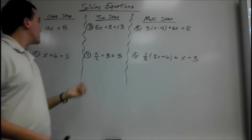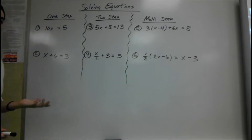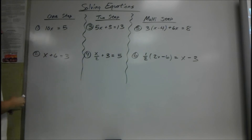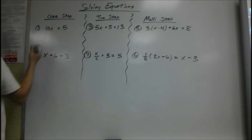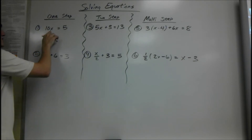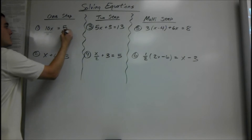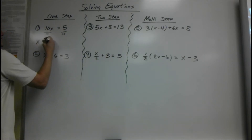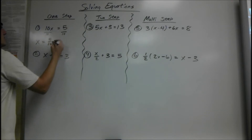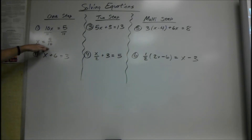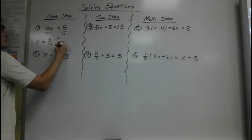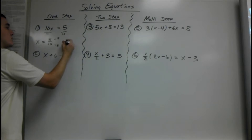First, we start out with the easiest one-step equations. Obviously it means you have to do one step to solve it. We have 10x equals 5. We would divide by 10, since we're multiplying we do the opposite to get rid of the 10. So since 10 is multiplying x and we're solving for x, we divide by 10 for both sides. x equals 5 over 10, but that's not reduced, so we divide both by 5. So x equals 1 half.